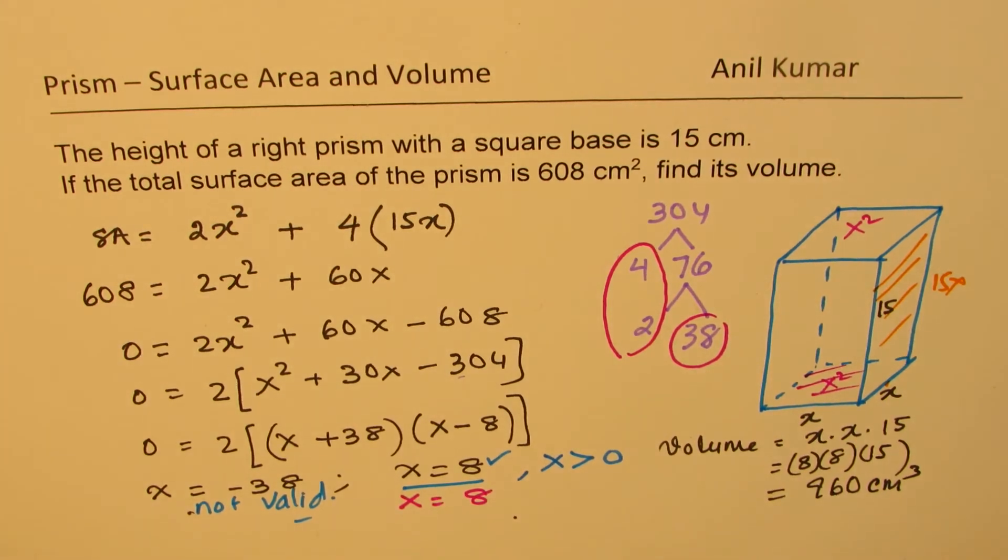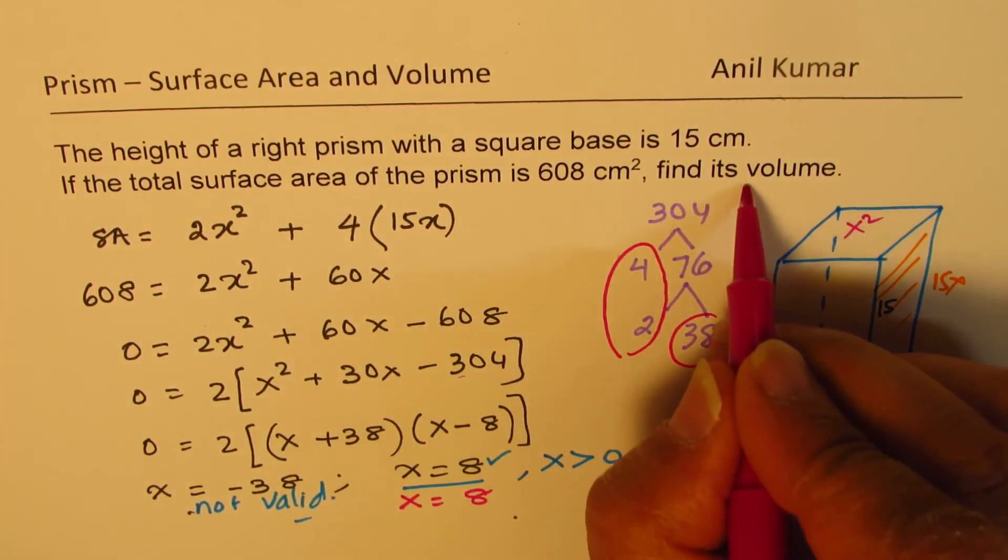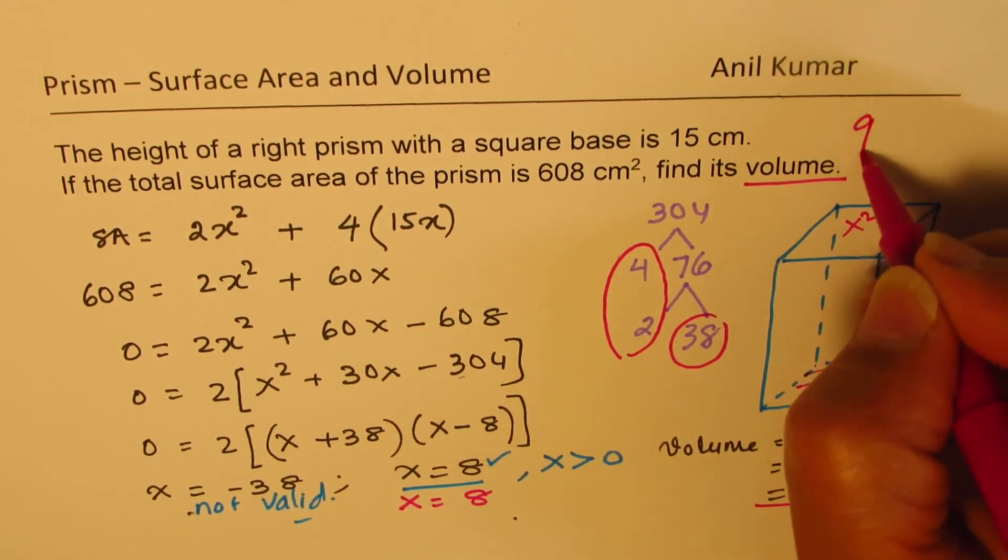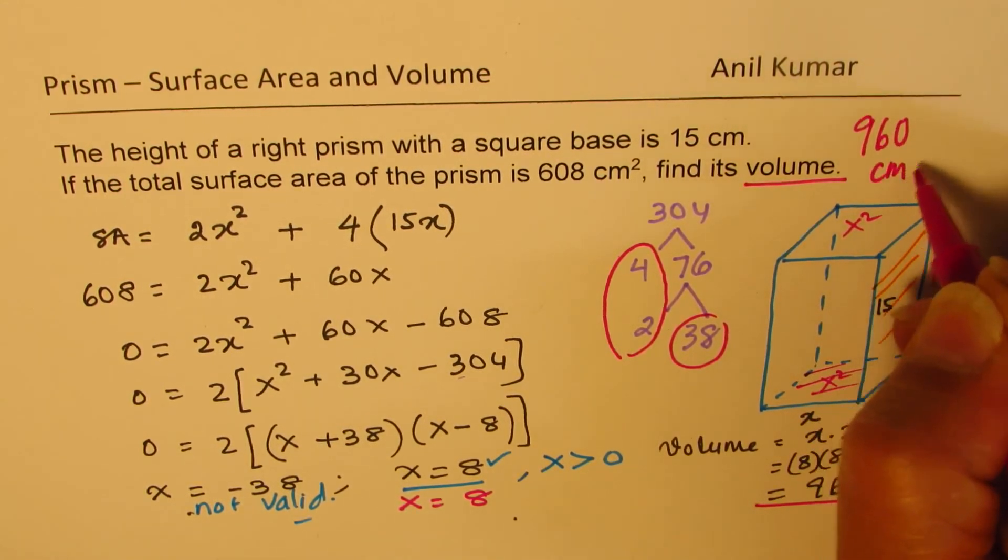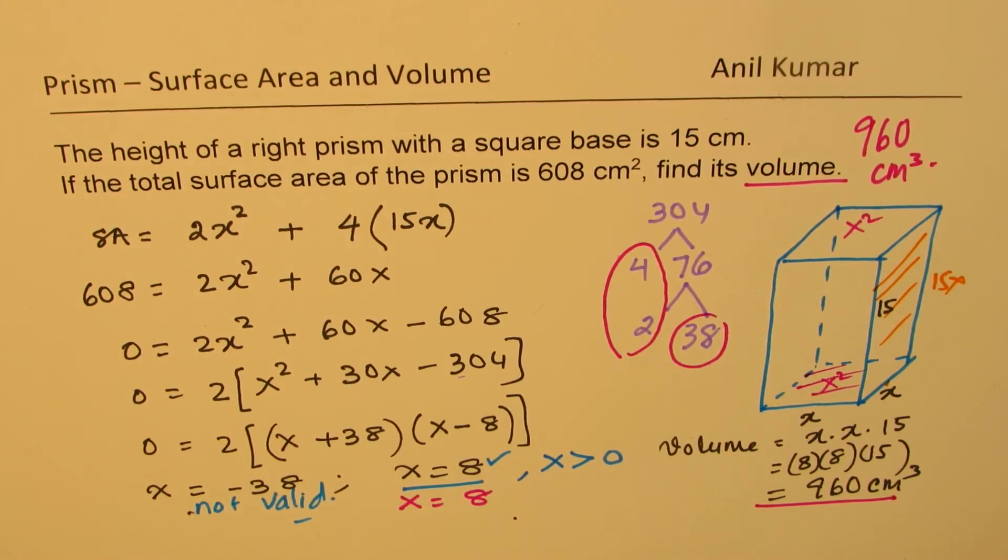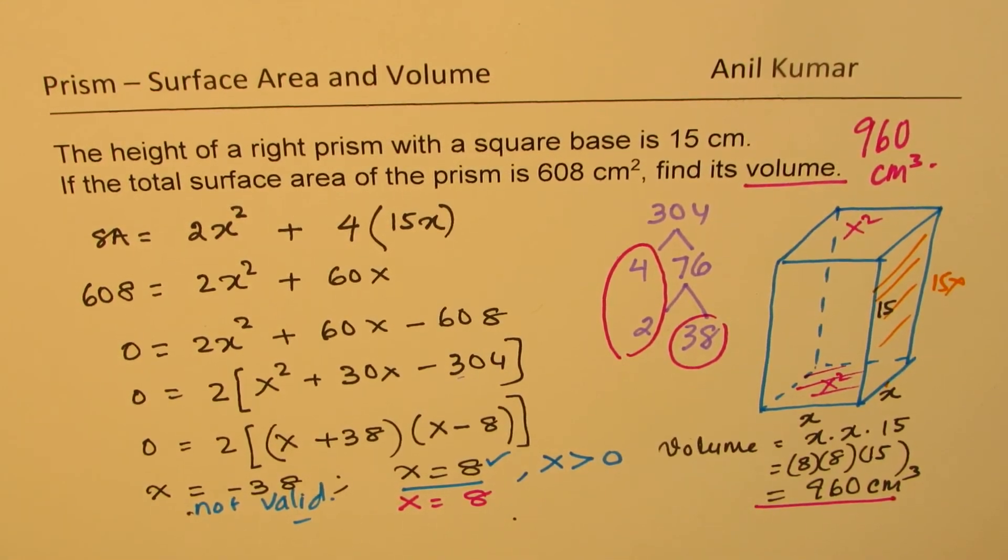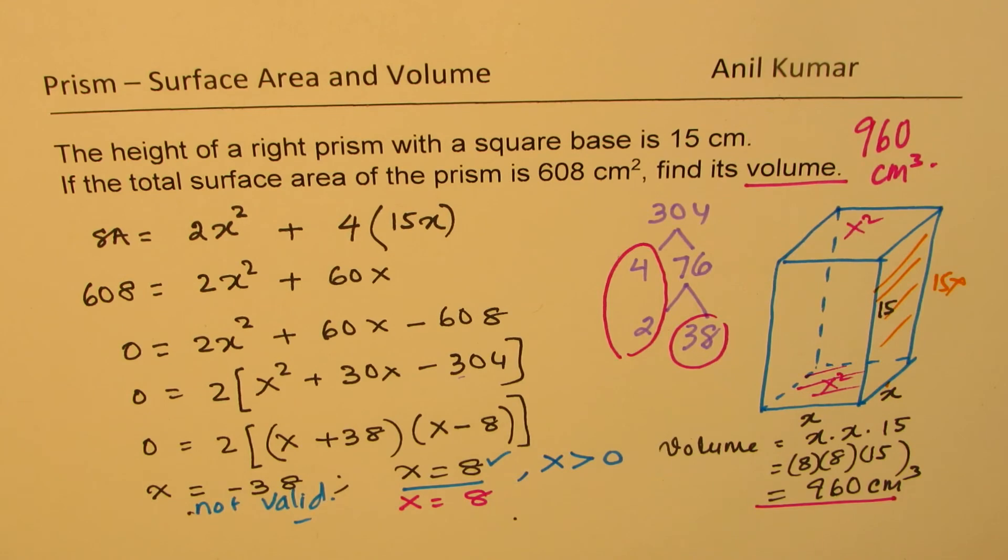So that is how you can actually find the solution of this question. Perfect. So we have a volume which is 960 centimeter cube. Feel free to write your comment, share your views, and if you like and subscribe to my videos, that'd be great. Thanks for watching and all the best.